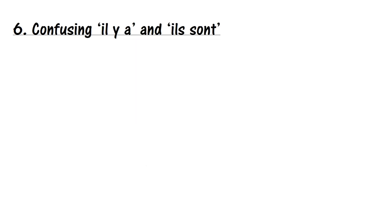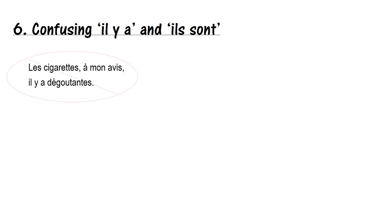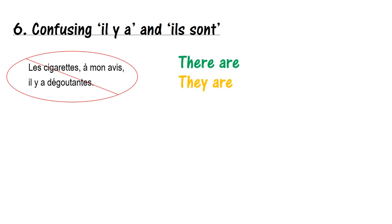Number six: another one I see a lot — confusing 'il y a' and 'ils sont.' Here's a recent example: 'Les cigarettes, à mon avis, il y a dégoûtante.' That student is trying to say 'cigarettes, in my opinion, they are disgusting.' The key is knowing the difference between 'there are' and 'they are' in English — we often interchange them when we shouldn't. They are two separate terms grammatically.